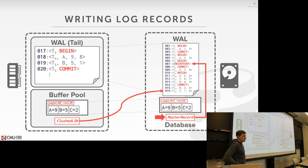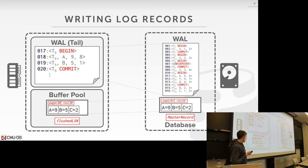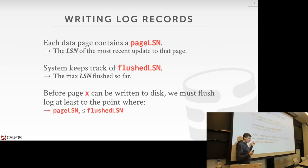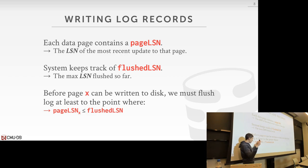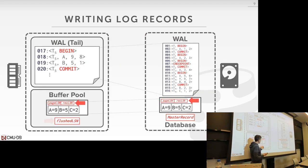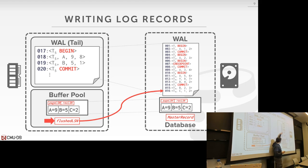The rec LSN is the one which makes the page dirty, and the page LSN is the last log sequence that made the page dirty. When I want to go decide whether I can flush my page, I need to know what was the last change made to that page. If that last change comes before the flush LSN, and this thing's been written to disk, then I know anything before it has been written to disk, and therefore it's safe for me to evict that page.